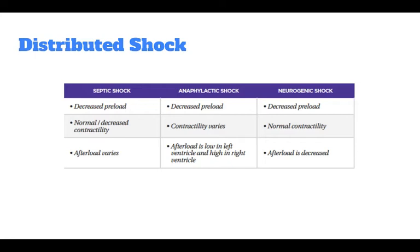In distributive shock, the preload, contractility, and afterload vary depending on the etiology. Distributive shock is difficult to recognize because the signs and symptoms vary greatly depending on the etiology. Common symptoms include tachypnea, tachycardia, low to normal blood pressure, decreased urine output, and decreased level of consciousness.